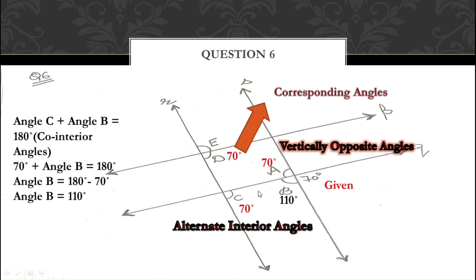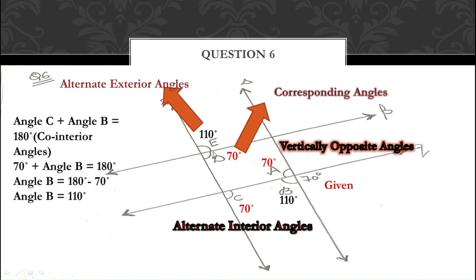Since angle B = 110°, angle E = 110° as well. Angles B and E are in the exterior region and are cross angles — they are alternate exterior angles — so their measurements are equal. Alternatively, angles D and E form a linear pair: D + E = 180°. Since D = 70°, E = 180 − 70 = 110°. So all missing angles have been found.